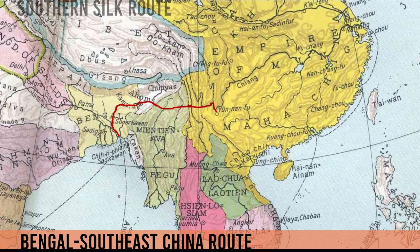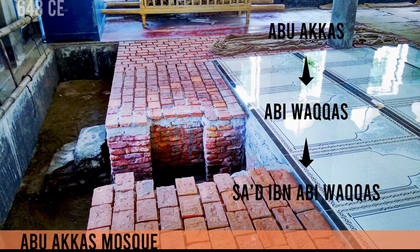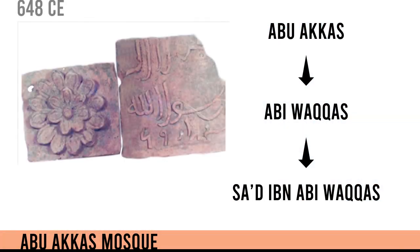This route was likely from Chittagong, Sonargaon, Sylhet, Manipur, the northern part of Myanmar, to Yunnan. Sad ibn Abi Waqqas had to repeatedly visit China to establish Islam there, and succeeded during his third visit. The Chinese traditional account clearly shows two things: first, Bengal came in contact with Islam as early as the first quarter of the 7th century CE; second, there was a frequent route between Chittagong and Yunnan in China. Recently, a mosque was discovered at Lalmonirhat in the heart of Bangladesh, locally called the Abu Akkas Mosque. According to the inscription found on the site, it is dated to 648 CE. It is assumed that the name Abu Akkas is derived from Abi Waqqas — the name of Sad ibn Abi Waqqas.